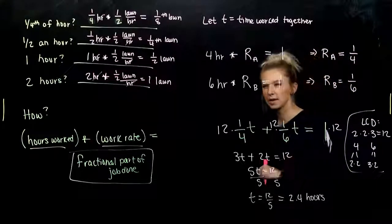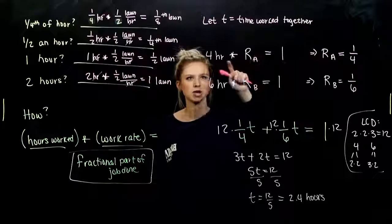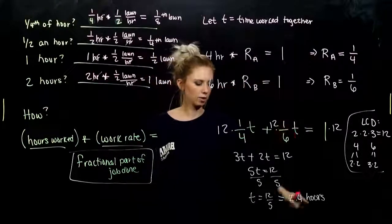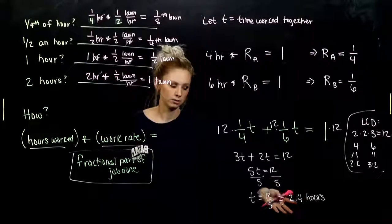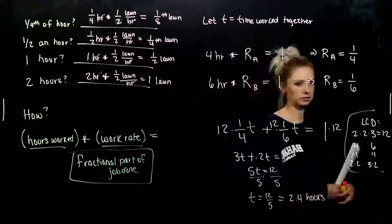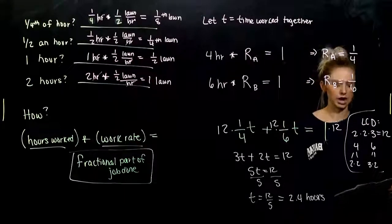Does that make sense? Crew A, they could finish the job in four hours. Crew B, they could finish the job in six hours. If they're working together, should it take them less time? I would hope so. And yeah, it's significantly shorter. Two point four hours is the time they need to work together to get that job done.